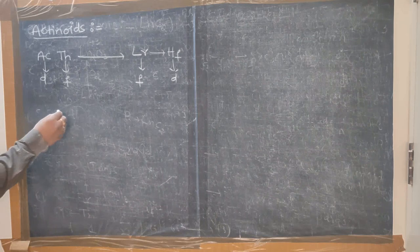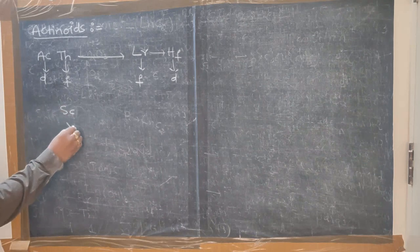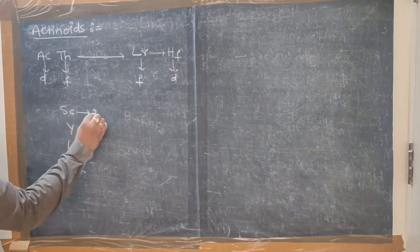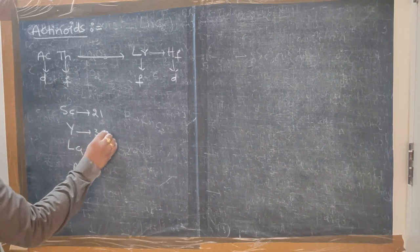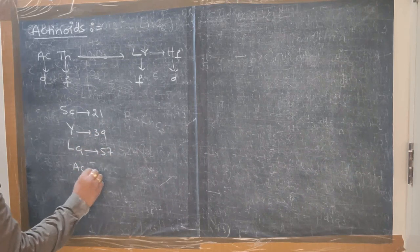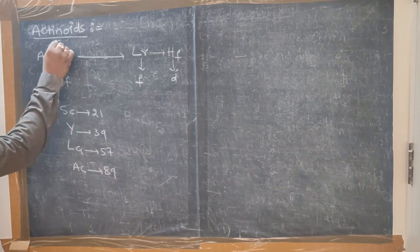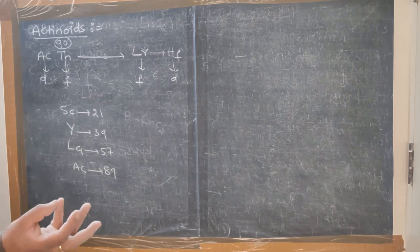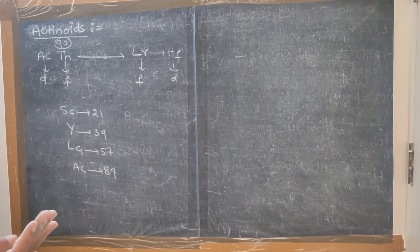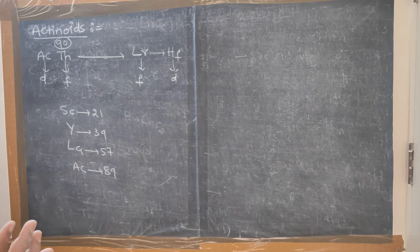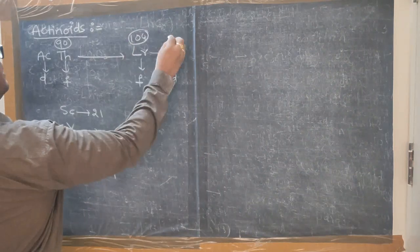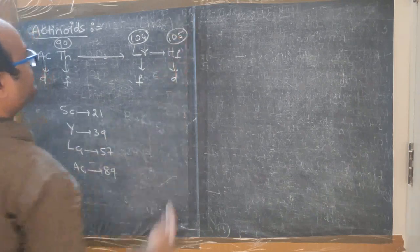We already know: scandium (21), then yttrium (39), then lanthanum (57), then actinium (89). So thorium is atomic number 90, and the series continues from 90 to 103 (Lawrencium). Hahnium is 105, so these are the actinide elements.